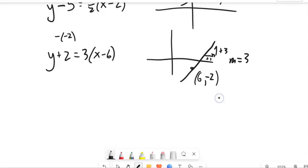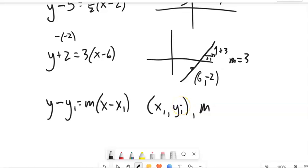In general, what we write is if we have a point, and we'll just say x sub 1, y sub 1, that just means the first x and the first y in the same point. And some slope, we could say y minus the y part equals the slope times x minus the x part.